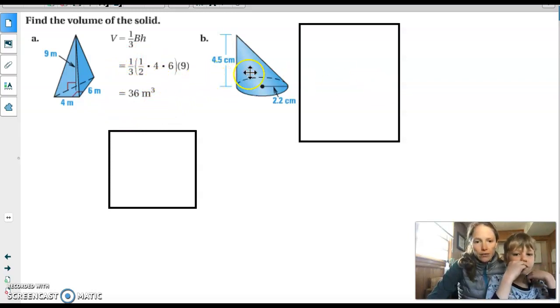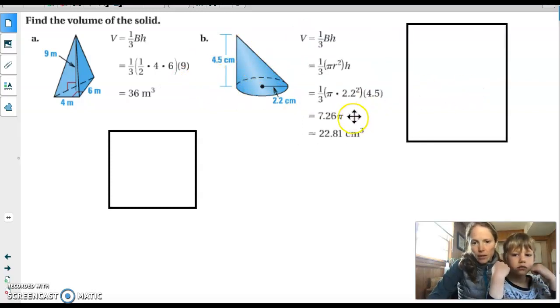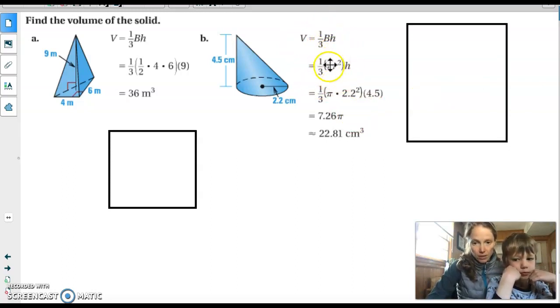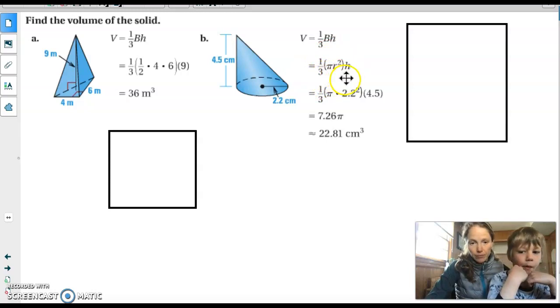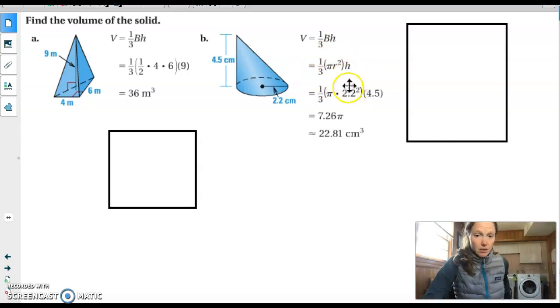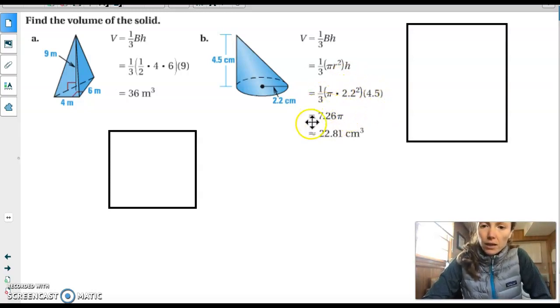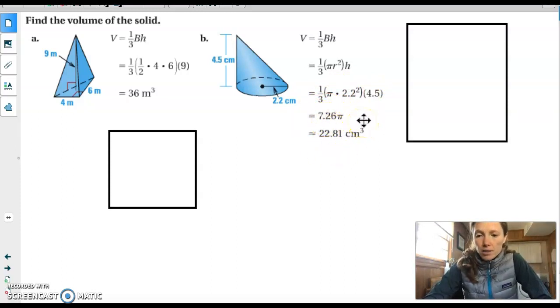If we look at the second one, at the cone, again, here we are with our volume formula, one third base times height. The base here is a circle, so it's pi r squared. We're still multiplying by the height. The radius is 2.2. The height is 4.5. We plug everything in and we can either get it in terms of pi, 7.26 pi. Or if you approximate in your calculator, it should be about 22.81 cubic centimeters.